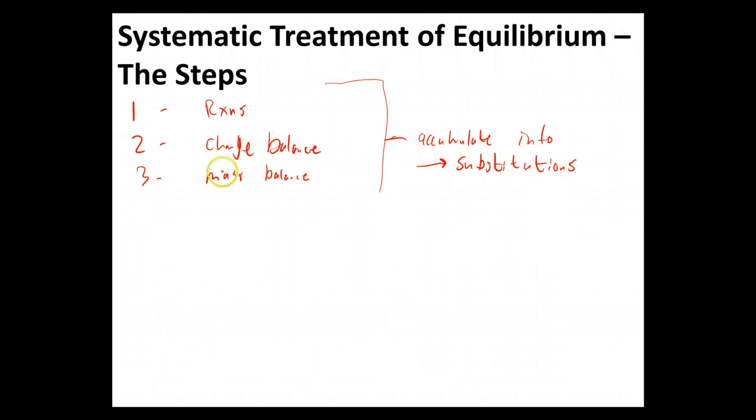Alright, so those are steps one, two, and three. Step four, we're going to write down our equilibrium constant. Now why would we need to do that? Keep in mind, our equilibrium constant is going to have all of our products for one of the key expressions and all of our reactants as well.